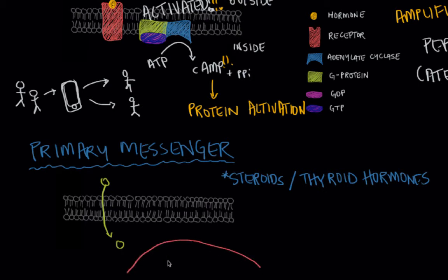It binds to a receptor that's located either in the cytosol or in the nucleus. We could imagine a nucleus with DNA inside. But when the hormone binds to the receptor that's either in the cytoplasm or inside the nucleus, that binding process is going to directly affect transcription in the nucleus or translation in the cytoplasm of the protein that's being activated by the hormone.